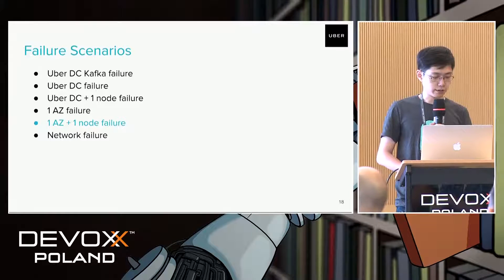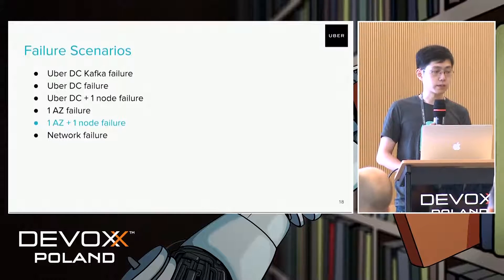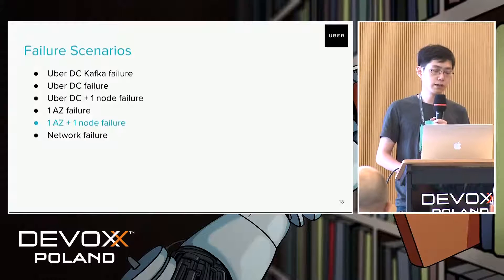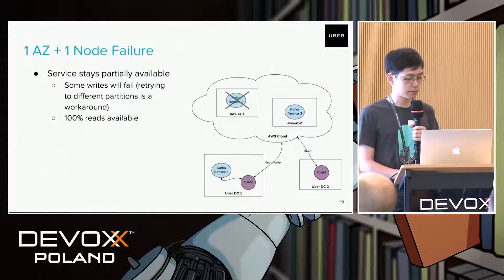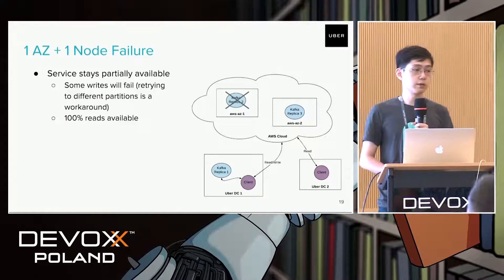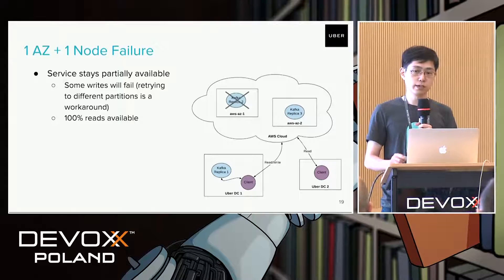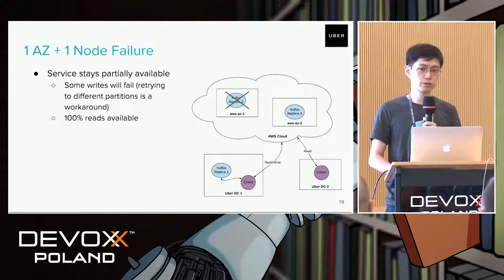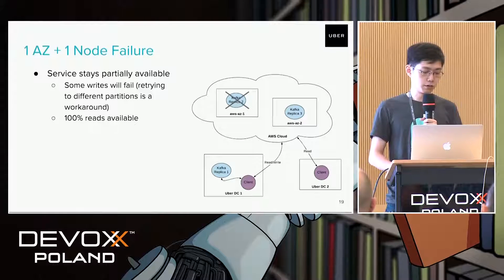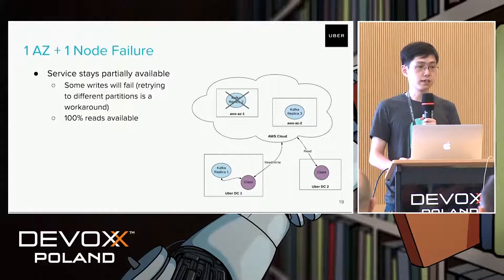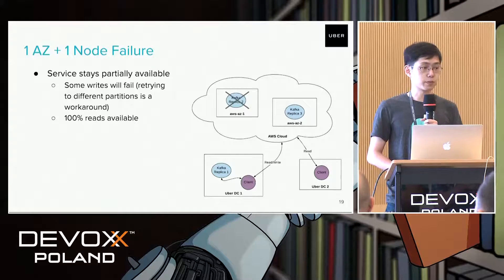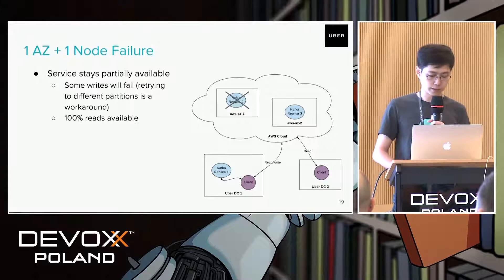The next failure scenario is one availability zone down plus one node in either the Uber data center or the other availability zone is also down. In this case, unfortunately, the service becomes only partially available, since for some partitions there is only one replica available. Producers can failover to a different partition to improve the availability of the whole cluster. However, reads are still 100% available for all clients in different Uber data centers.